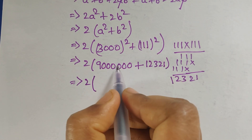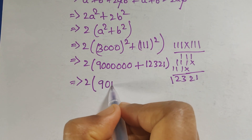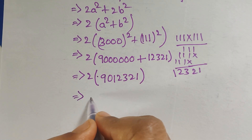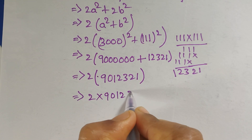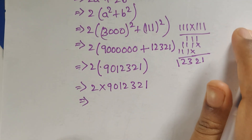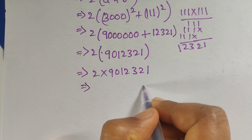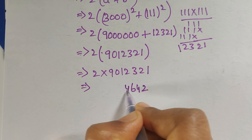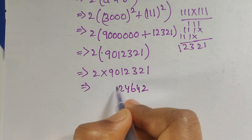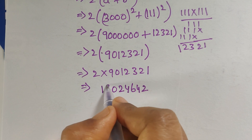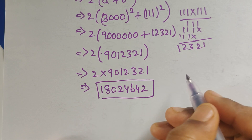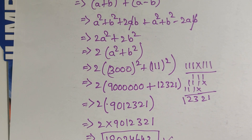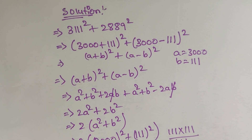Now we multiply 9,012,321 by 2. So 2 × 1 = 2, 2 × 2 = 4, 2 × 3 = 6, 2 × 2 = 4, 2 × 1 = 2, 2 × 0 = 0, 2 × 9 = 18. So the final answer is 18,024,642. Thank you for watching — please subscribe for more videos. Take care, bye bye!